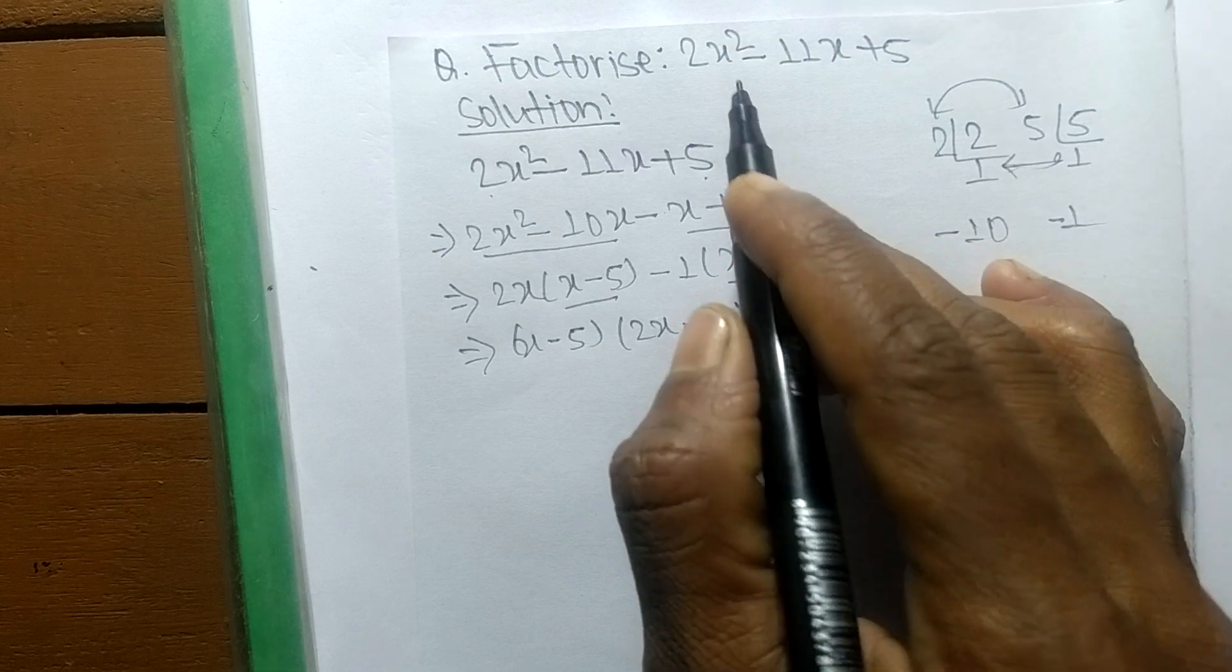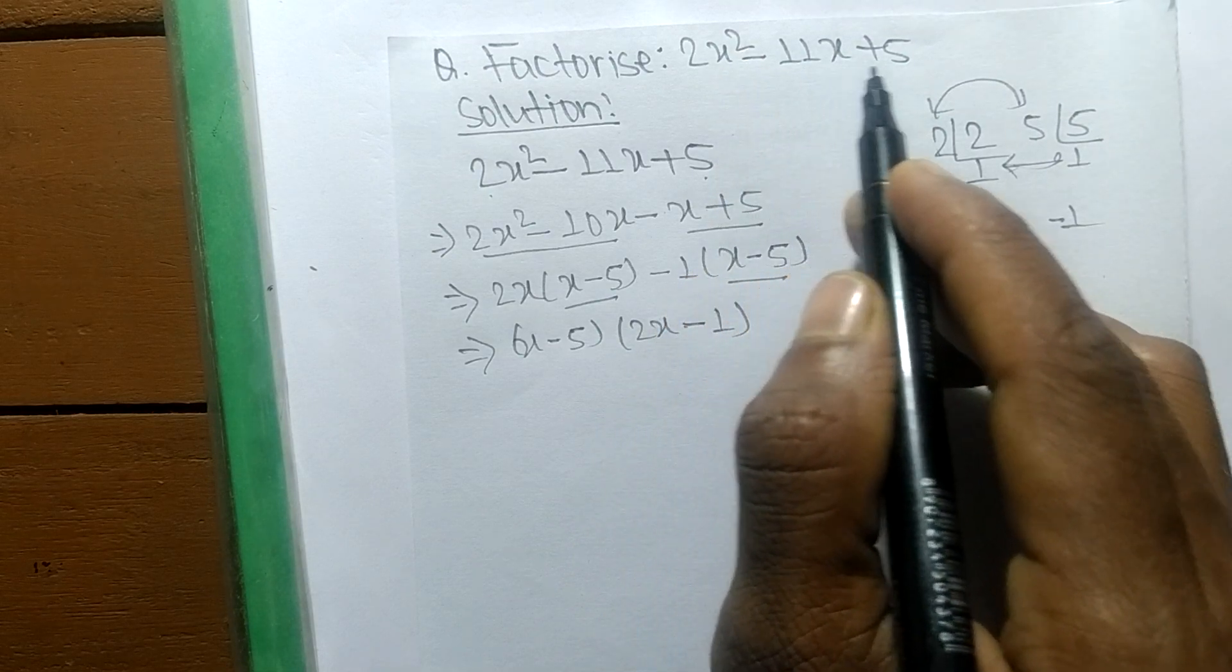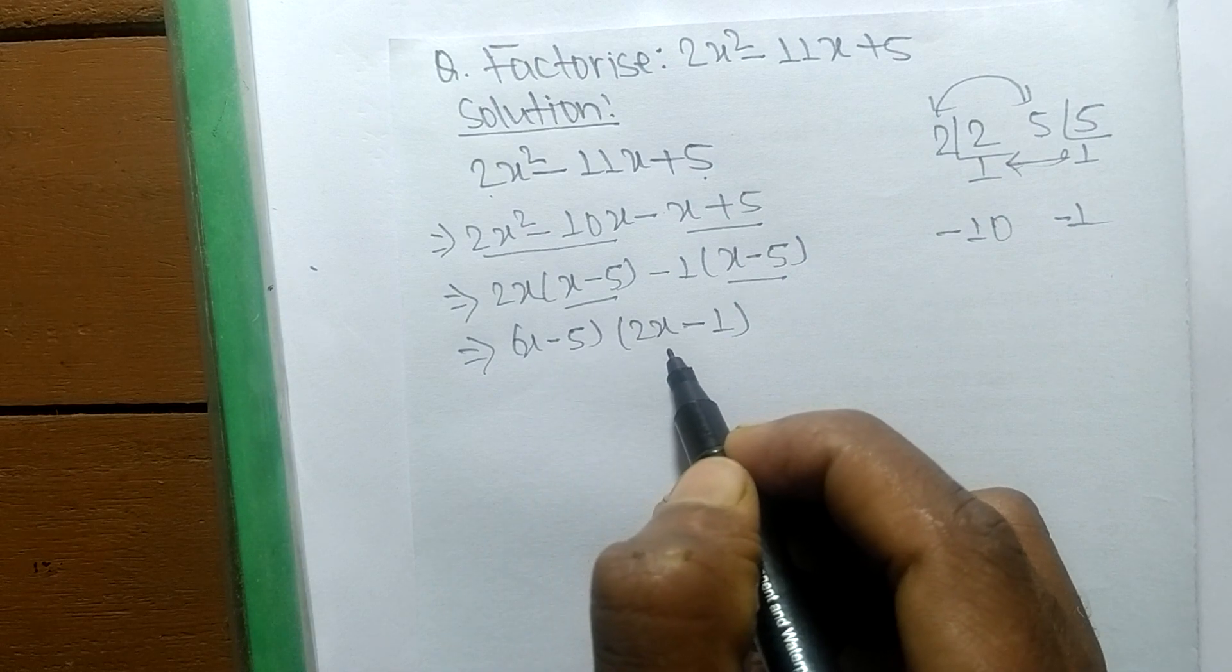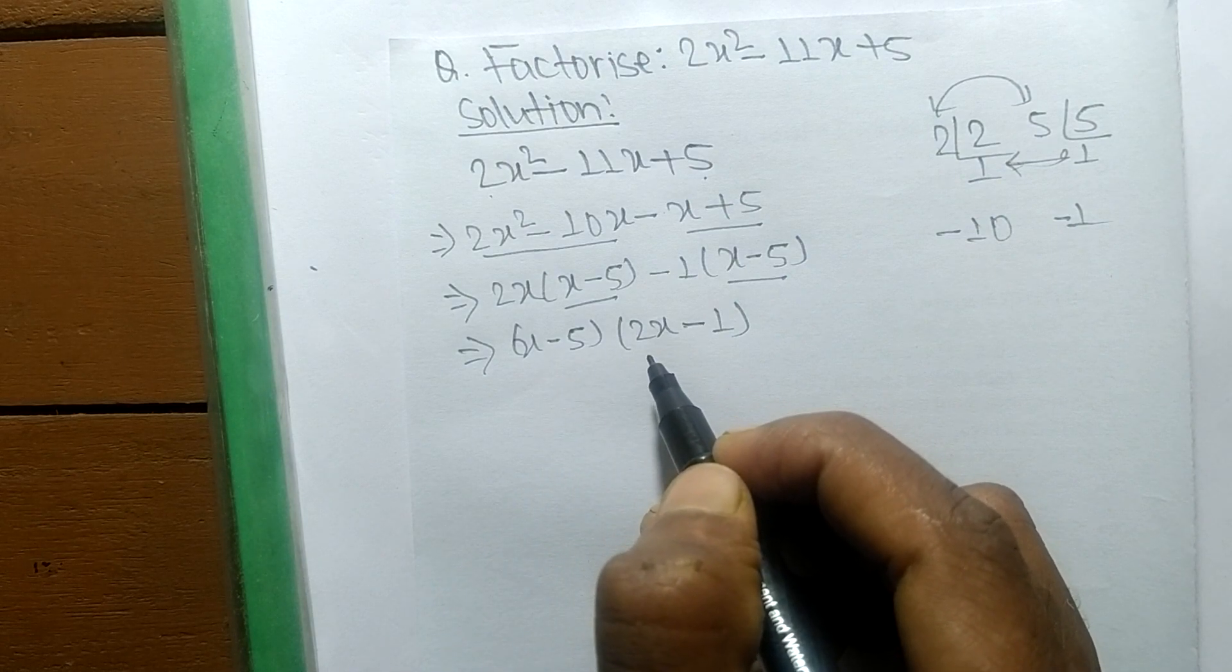The prime factors of 2x² - 11x + 5 is (x - 5) and (2x - 1).